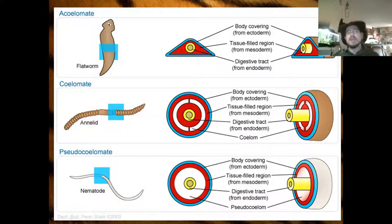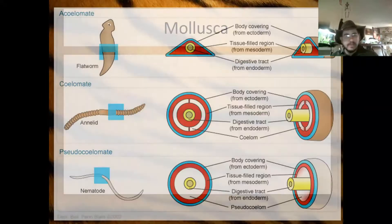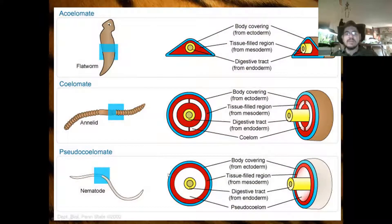So that's what we mean by acoelomate — no body cavity; pseudocoelomate — a body cavity not fully lined by mesoderm; and coelomate — a body cavity fully lined by mesoderm. Think of mesoderm as connective tissue and muscle — that's your best bet when envisioning mesoderm.